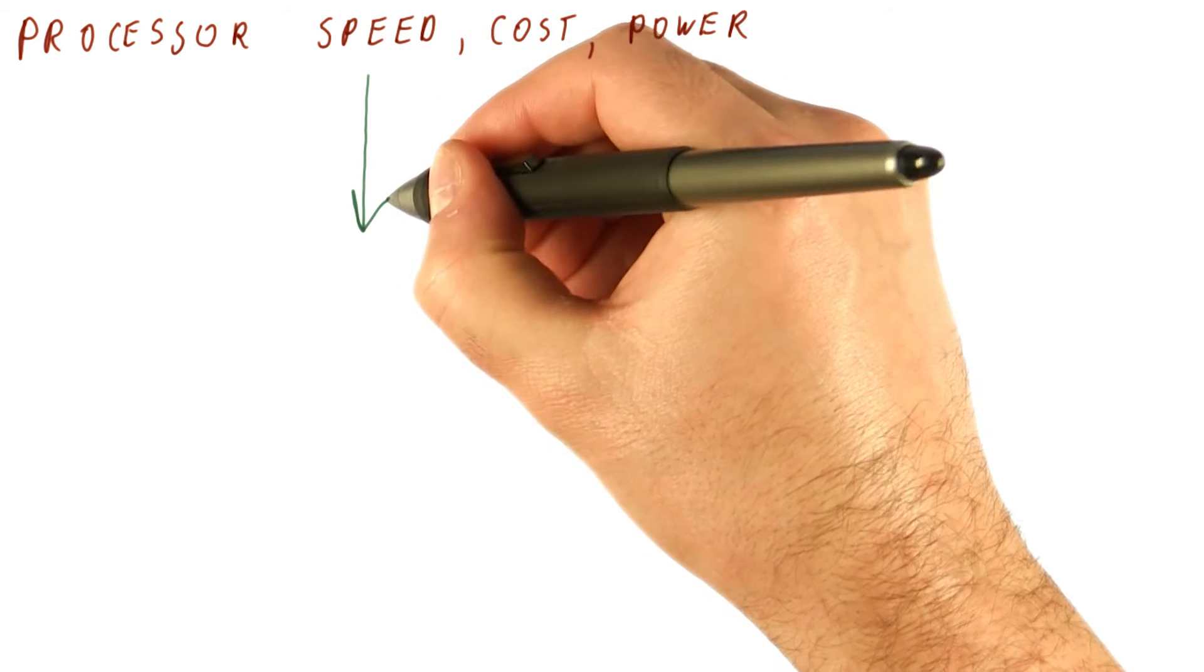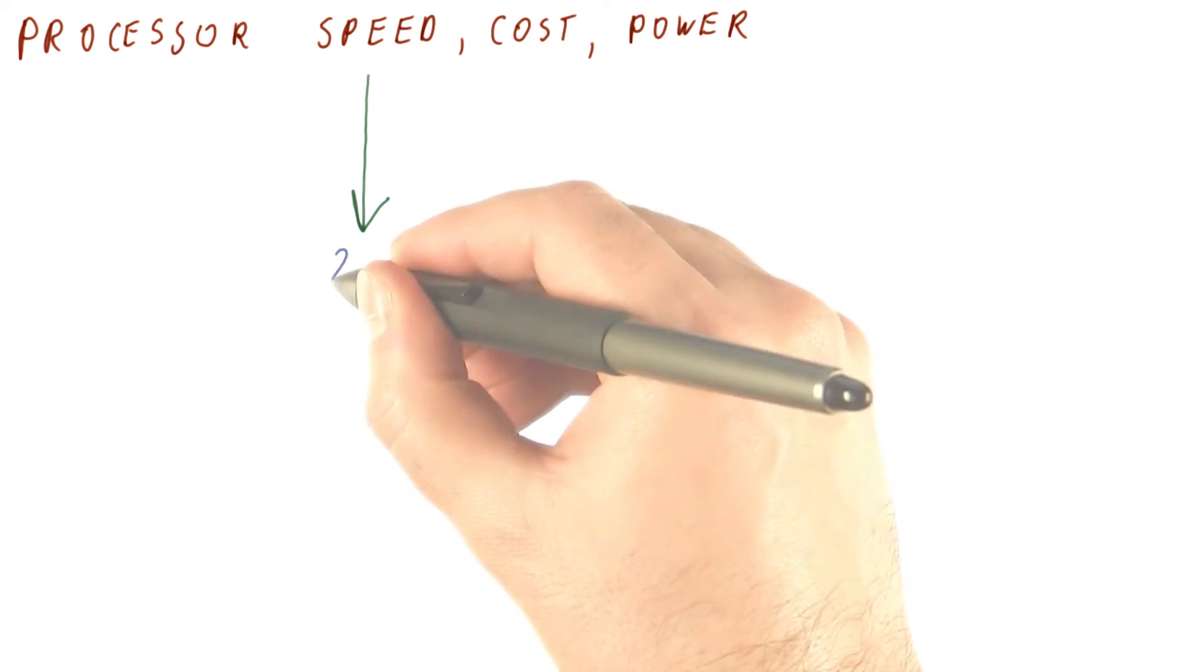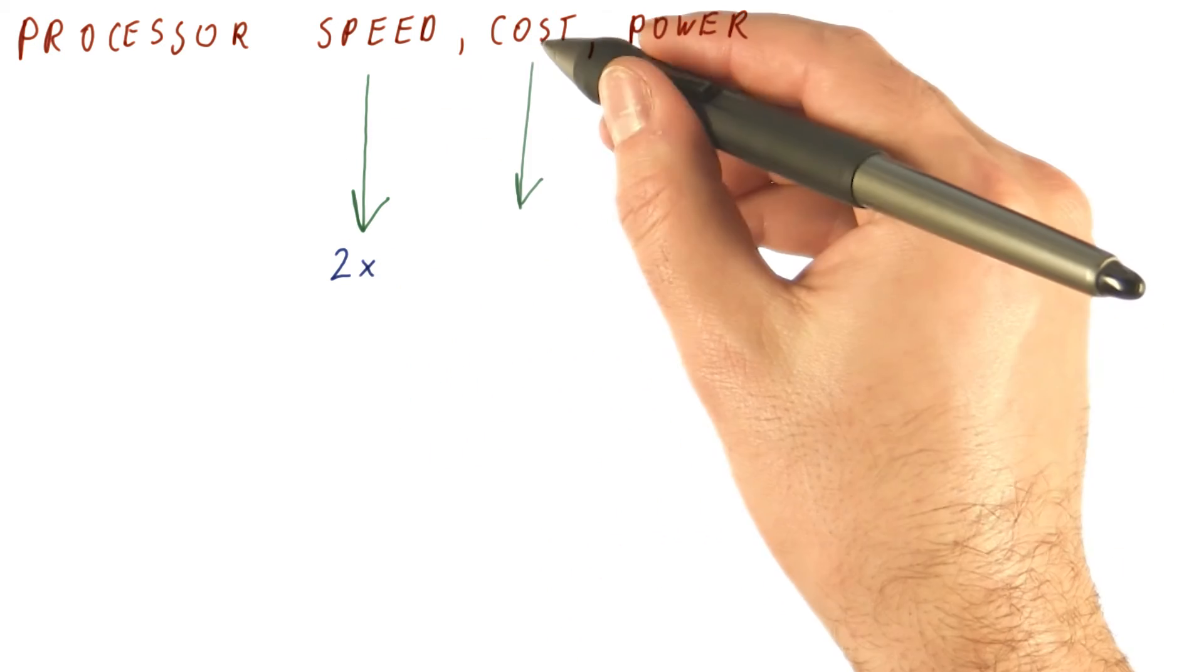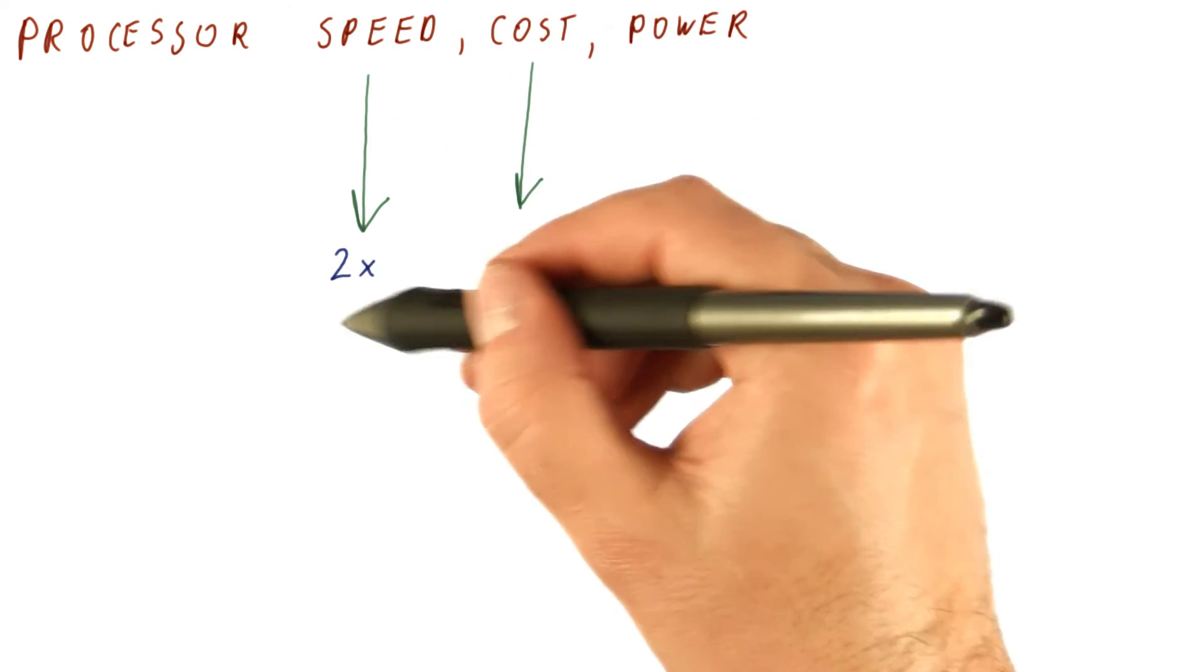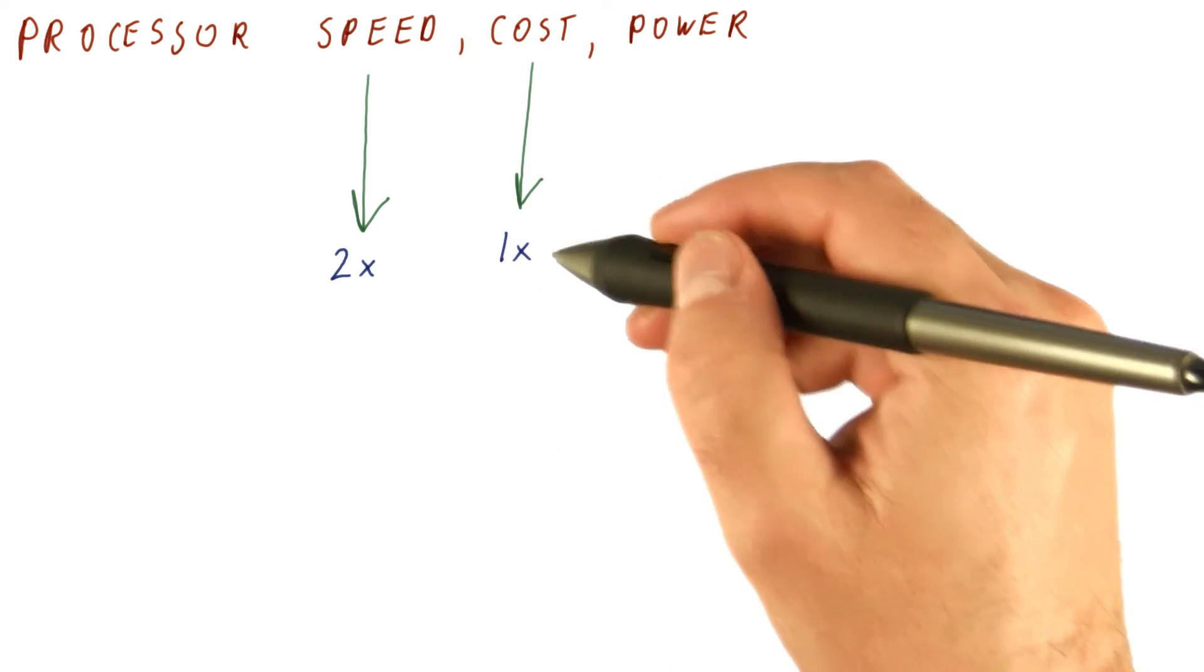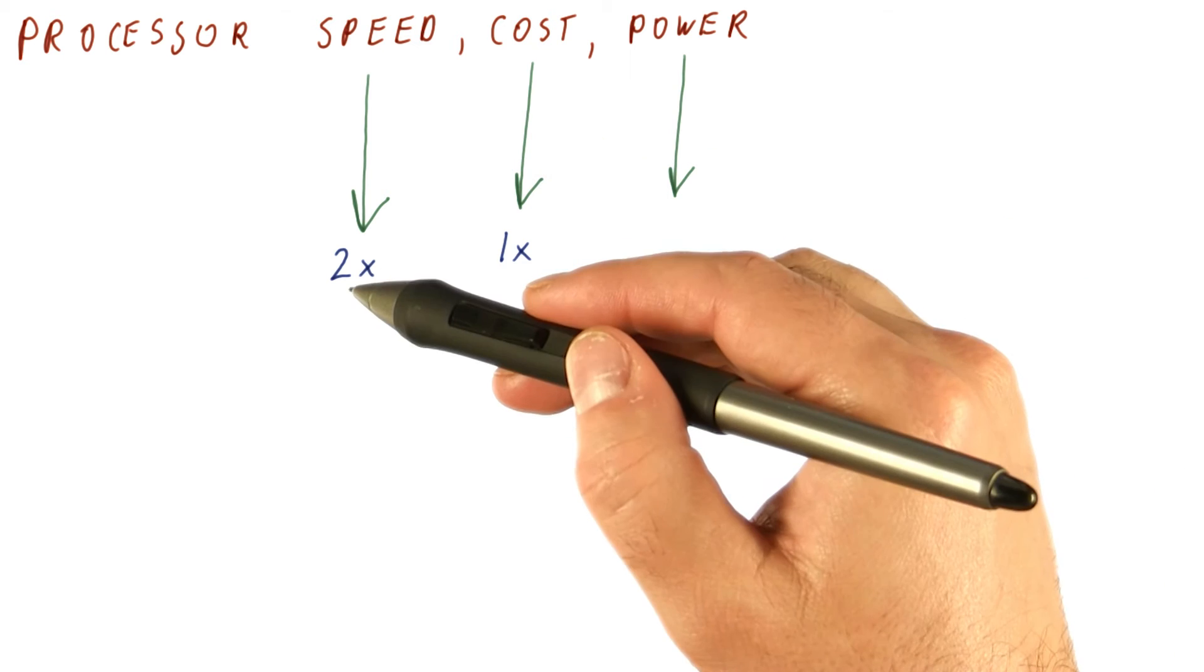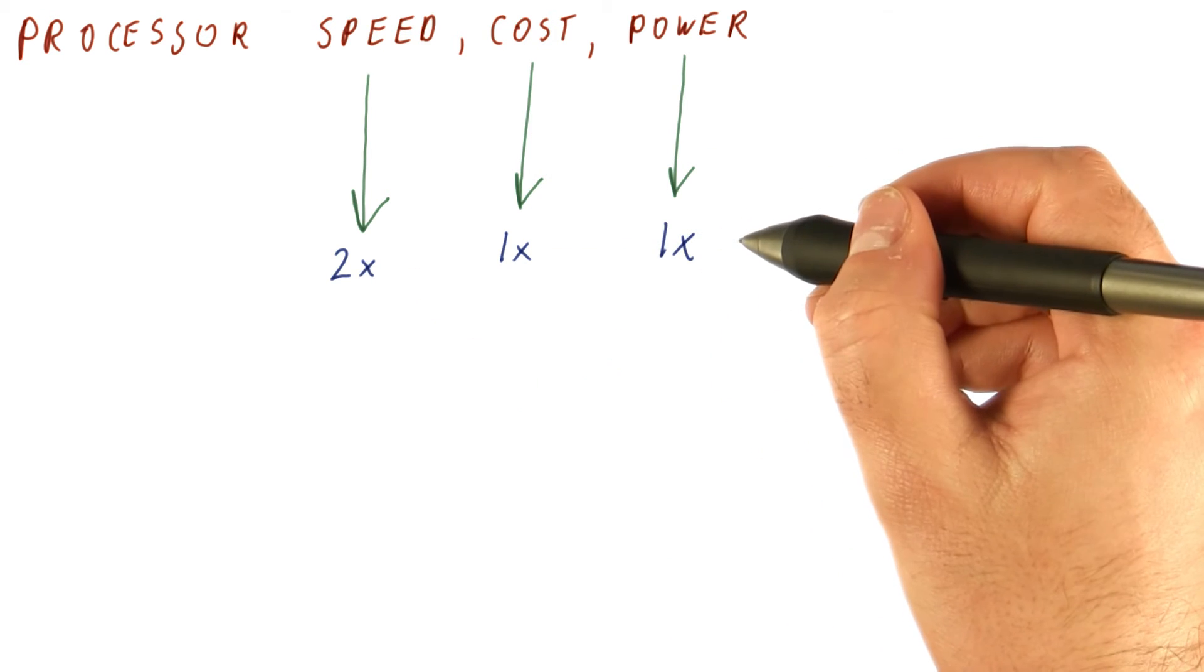So what we really want is that the speed of a processor doubles over something like two years, that the cost of this twice as fast processor stays about the same, and that the power consumption of this twice as fast processor stays about the same as before.